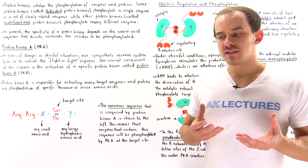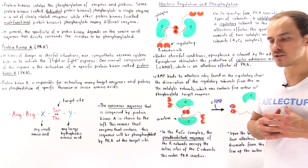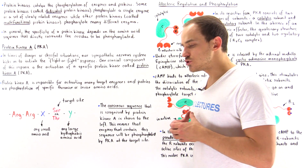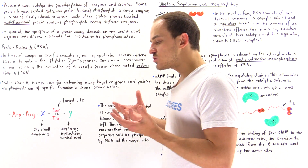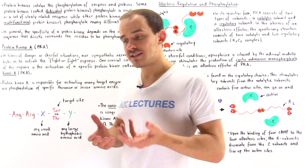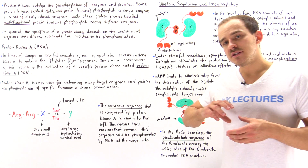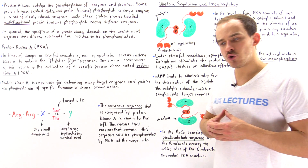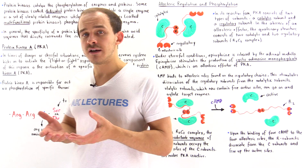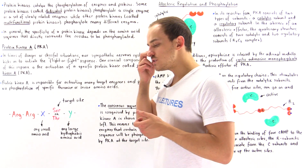Protein kinases are enzymes found inside our body which are responsible for catalyzing phosphorylation reactions. As we discussed previously, phosphorylation is an example of covalent modification, and this is a mechanism that our cells use to basically regulate and control the activity of enzymes and the functionality of proteins.